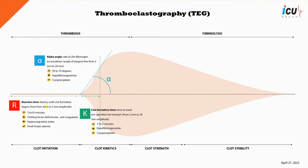The alpha-angle parameter measures the slope of the curve generated by the TEG machine during the clot formation process in the kinetical phase. It reflects the rate at which fibrin crosslinking occurs, as an indication of the strength of the clot. Normal value is between 50 to 70 degrees, and it would be decreased in cases of hypofibrinogenemia and may require the administration of cryoprecipitate.